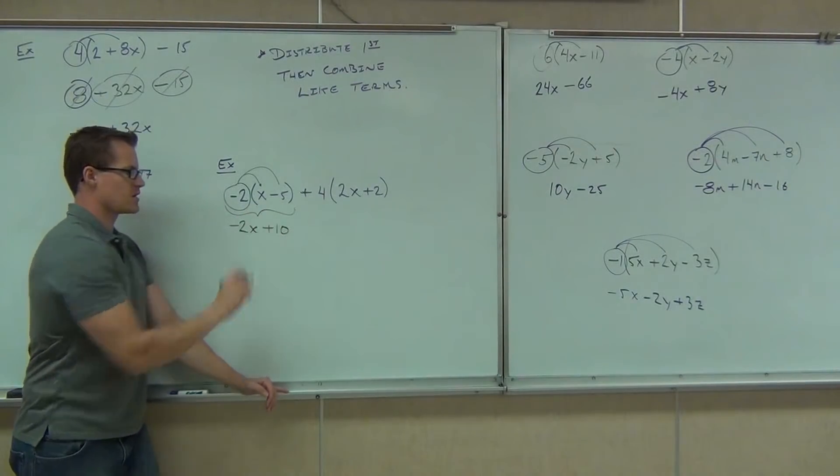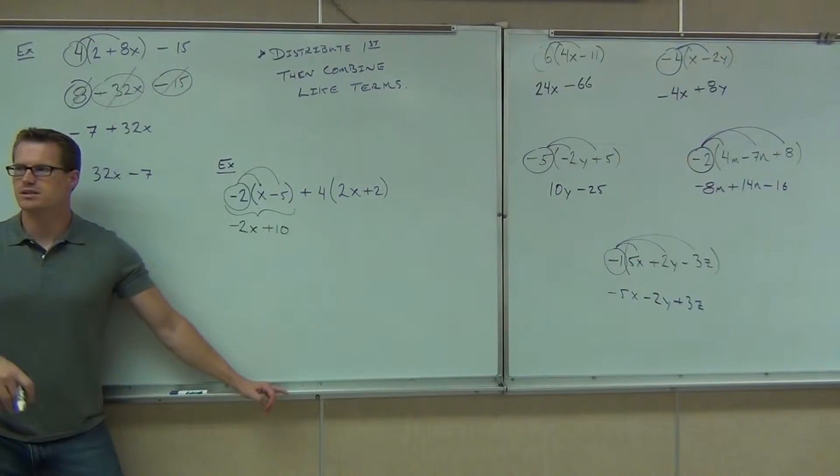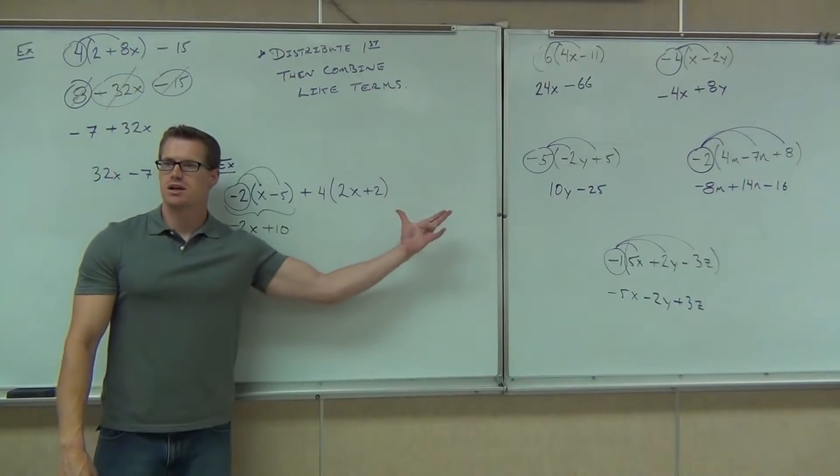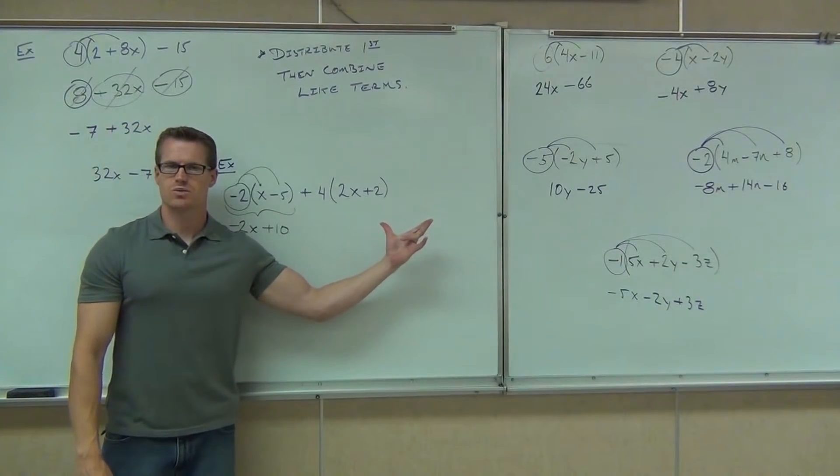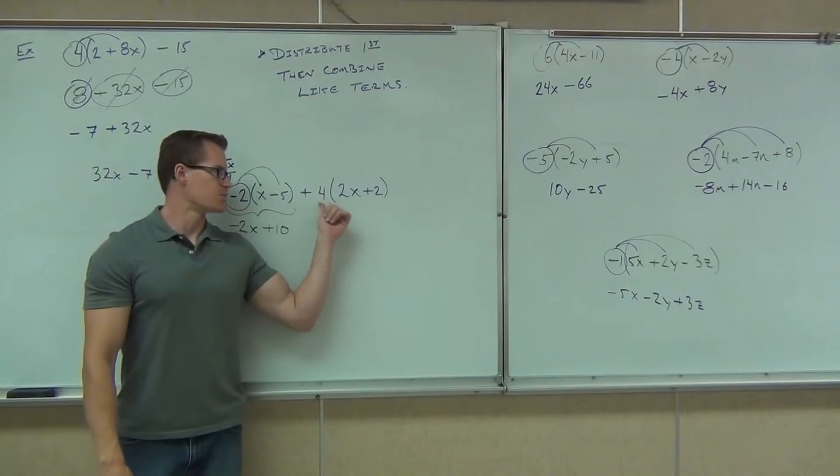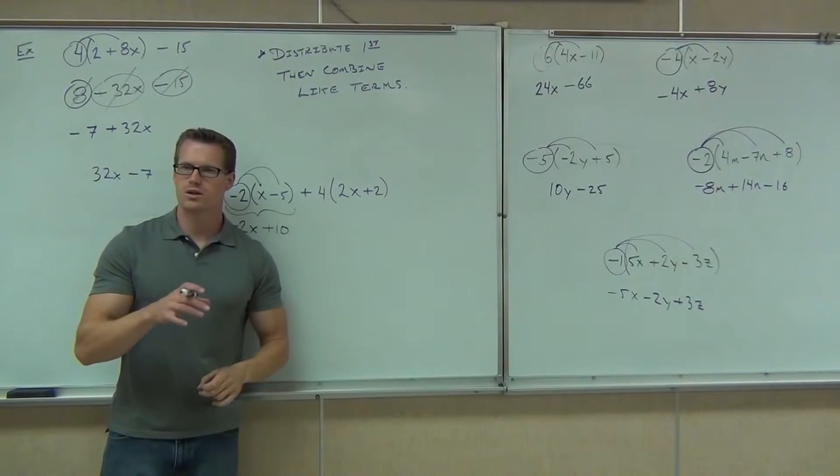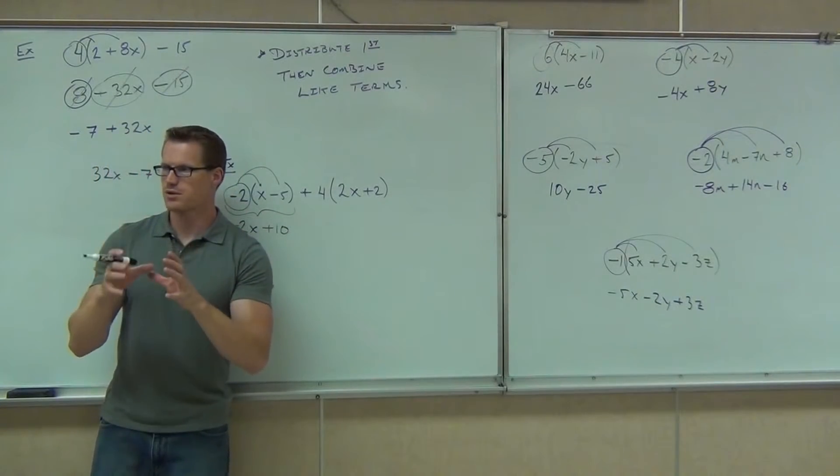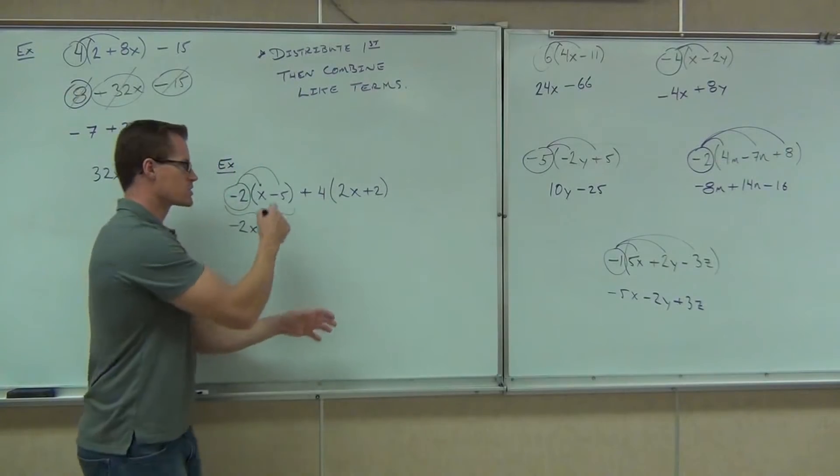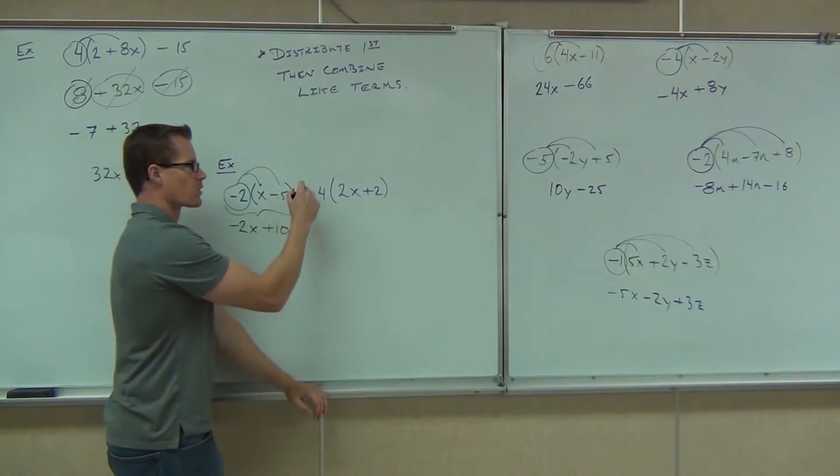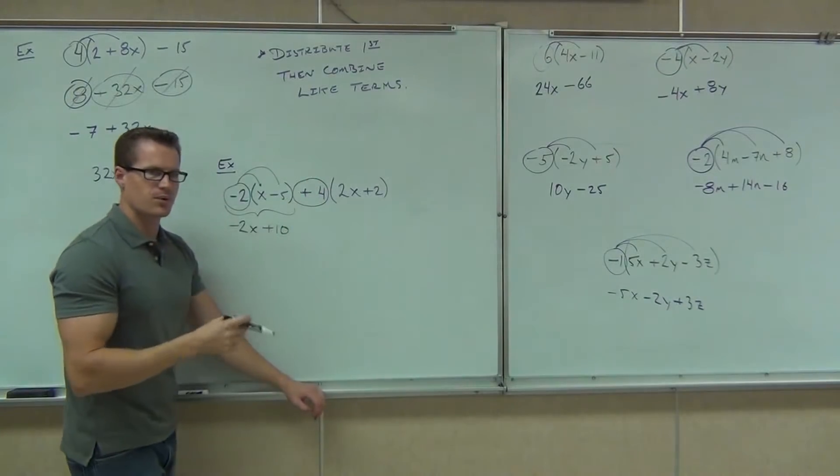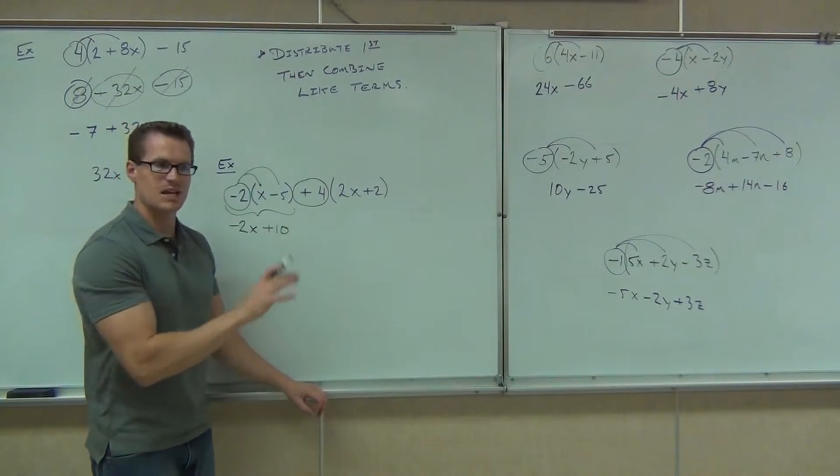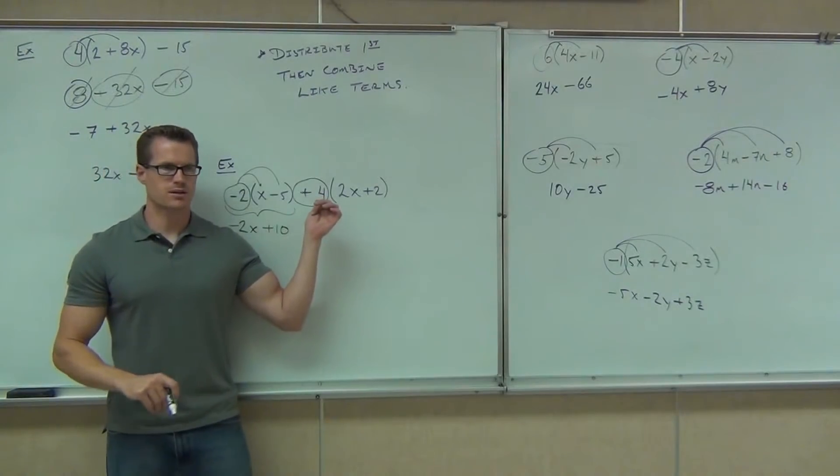You guys agree that this part is the same as that part, right? Correct. We've already done stuff like that. That was 20 minutes ago. Now we get to distribute this. Here's what I need you to do. Please watch carefully. This isn't going to make such a difference because that's a plus right now. However, if that's a minus, this will make a huge difference. I always want you to circle the number in front of the parenthesis with the sign. So here we circled not 2, but negative 2. Here we're going to circle 4 with its sign, with that plus.